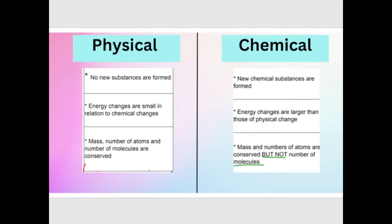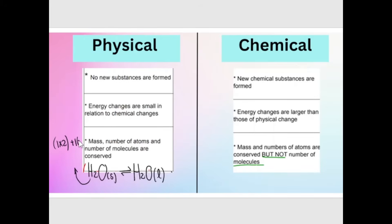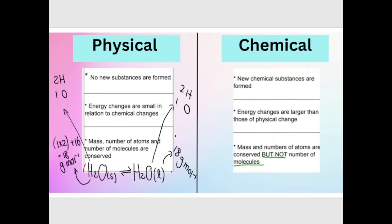In physical change, the mass, the number of atoms, and the number of molecules are conserved — they stay the same. An example would be going from solid H₂O to liquid H₂O. The mass is the same: hydrogen has atomic mass 1, multiplied by 2, plus 16 for oxygen gives 18 grams per mole on both sides. The number of atoms is conserved — two hydrogens and one oxygen on each side. And the number of molecules: one molecule of water on each side.